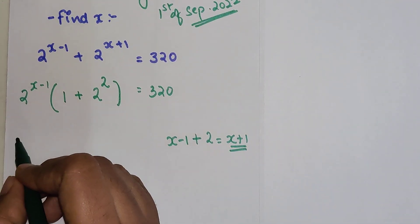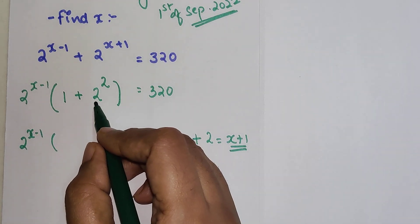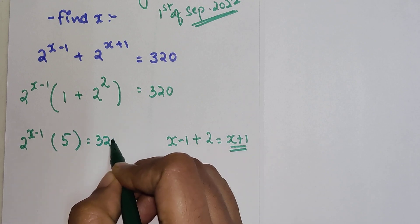So now over here what you have is 2 raised to x minus 1. This becomes 1 plus 2 raised to 2 becomes 5. 5 is equal to 320.